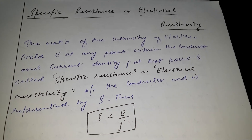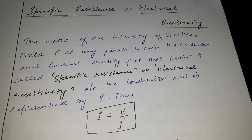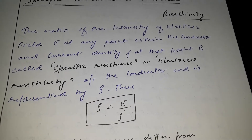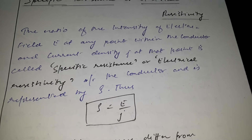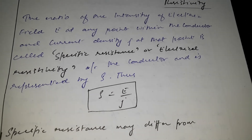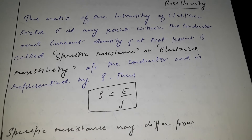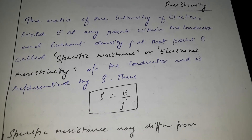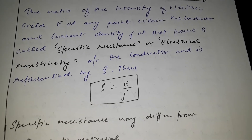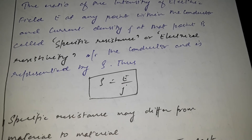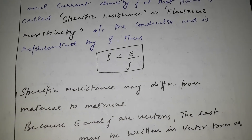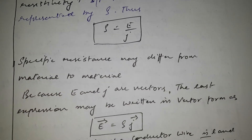Our new topic is specific resistance or electrical resistivity. The ratio of the intensity of electric field E at any point within the conductor and current density J at that point is called specific resistance or electrical resistivity of the conductor, and is represented by rho. Thus, rho is equal to E by J. Specific resistance may differ from material to material.